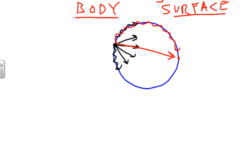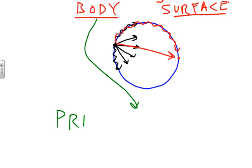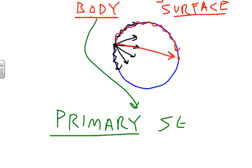The two types of body waves are the P wave, or primary wave, and the S wave, or secondary wave.